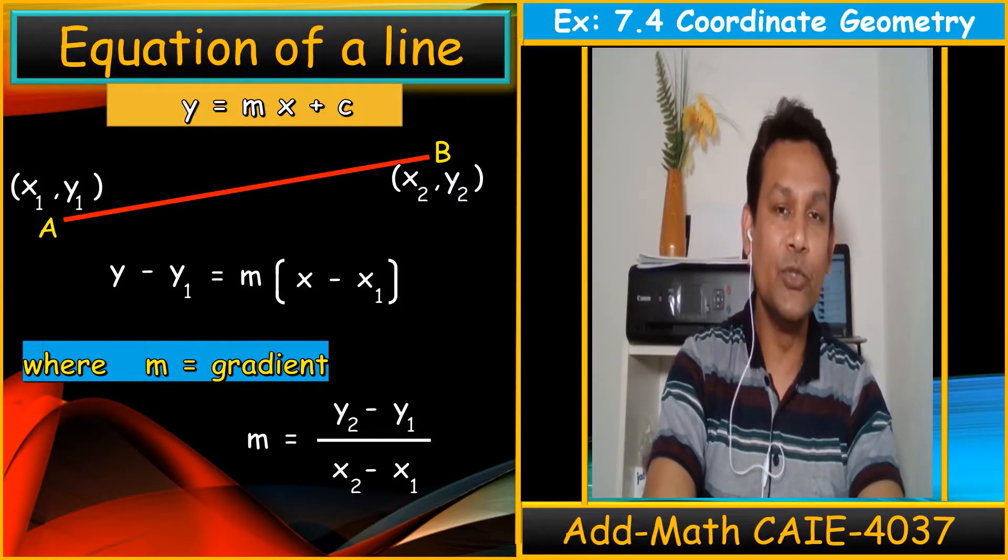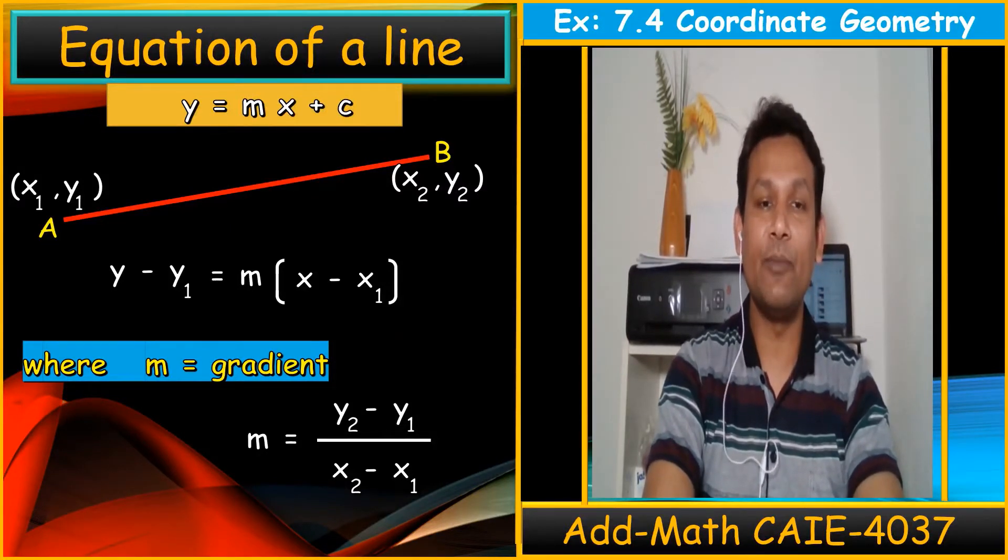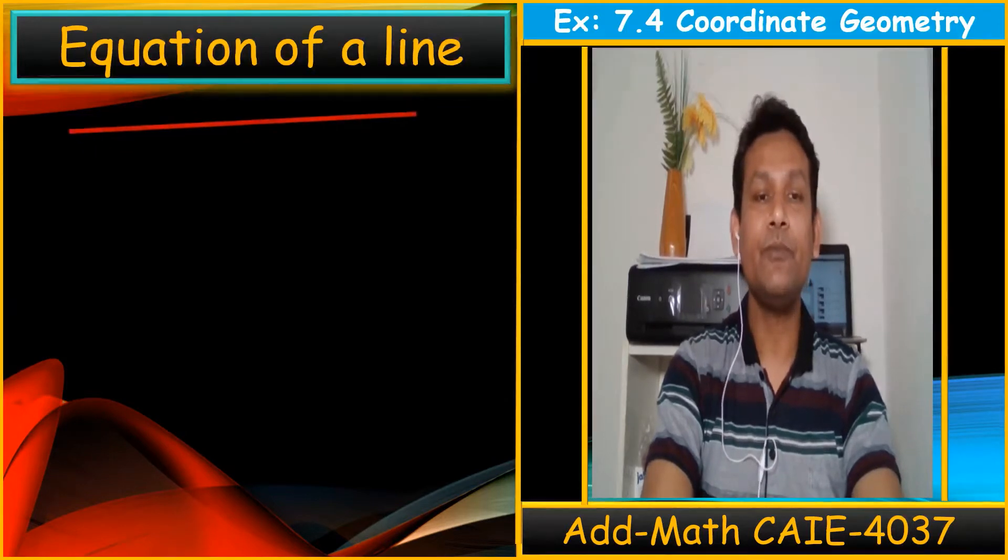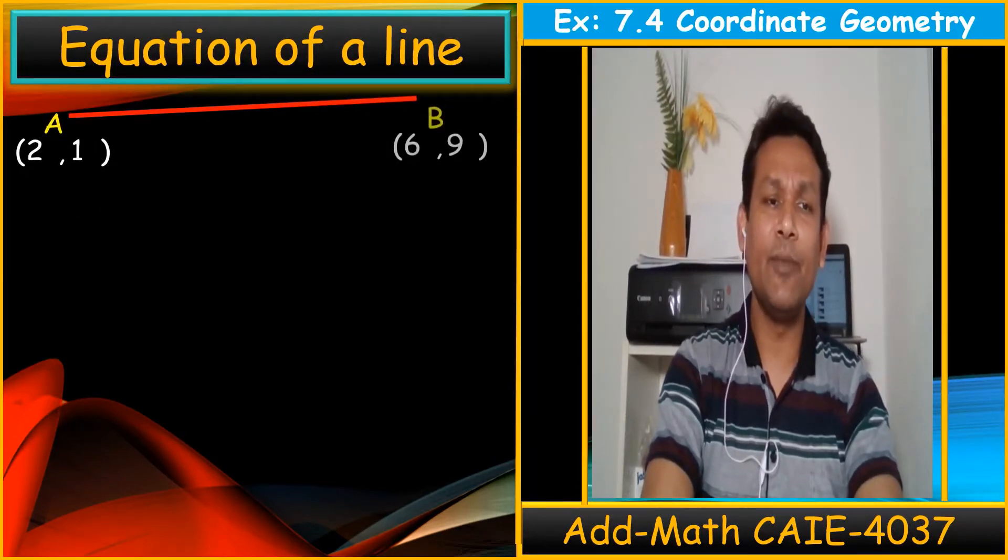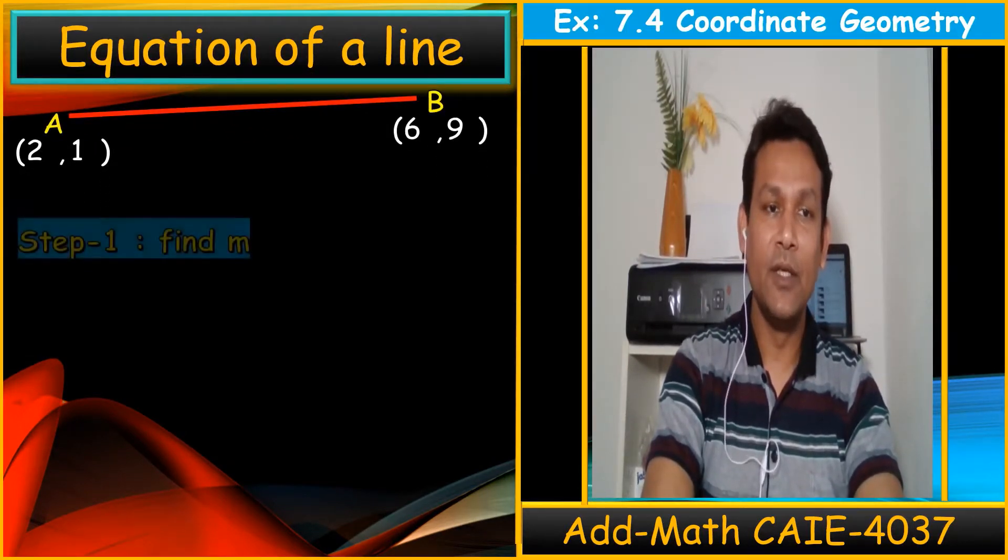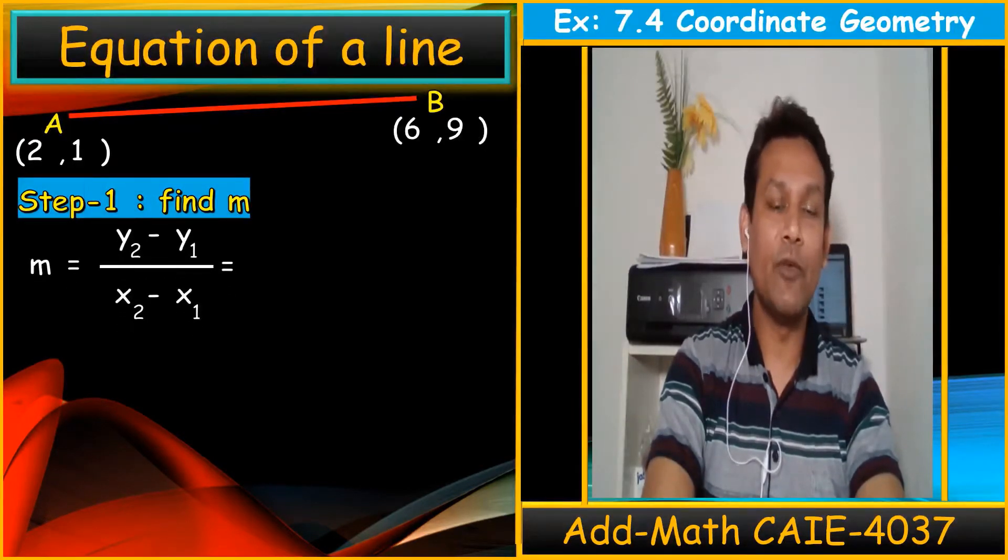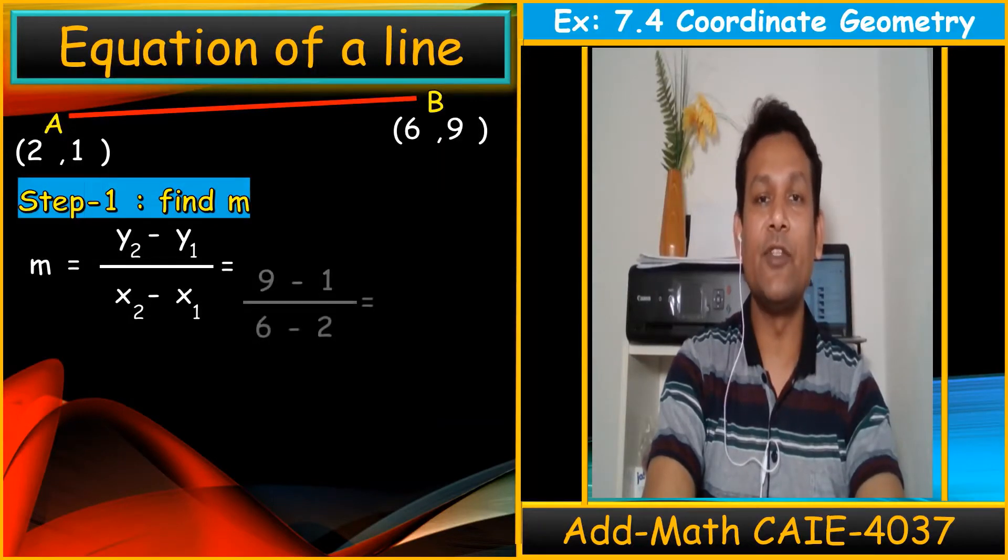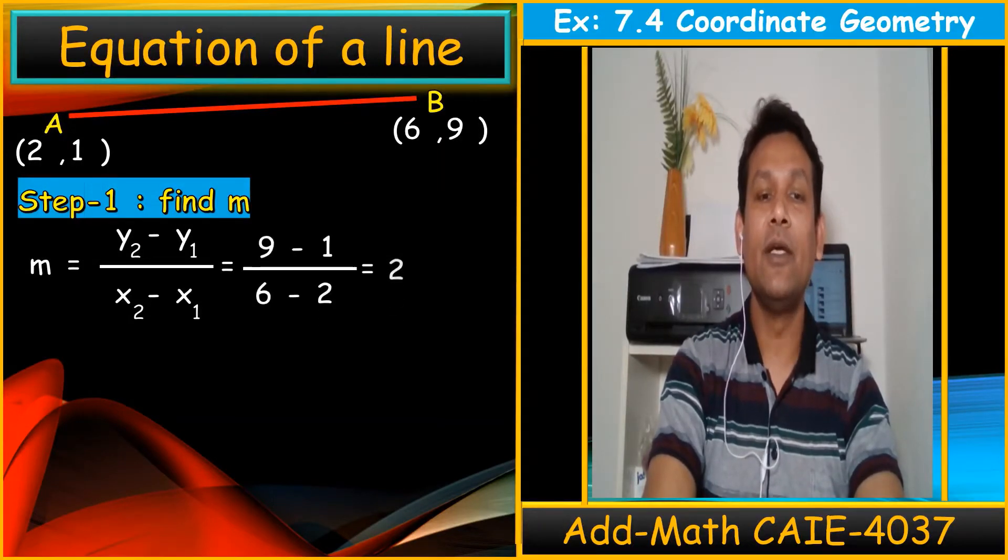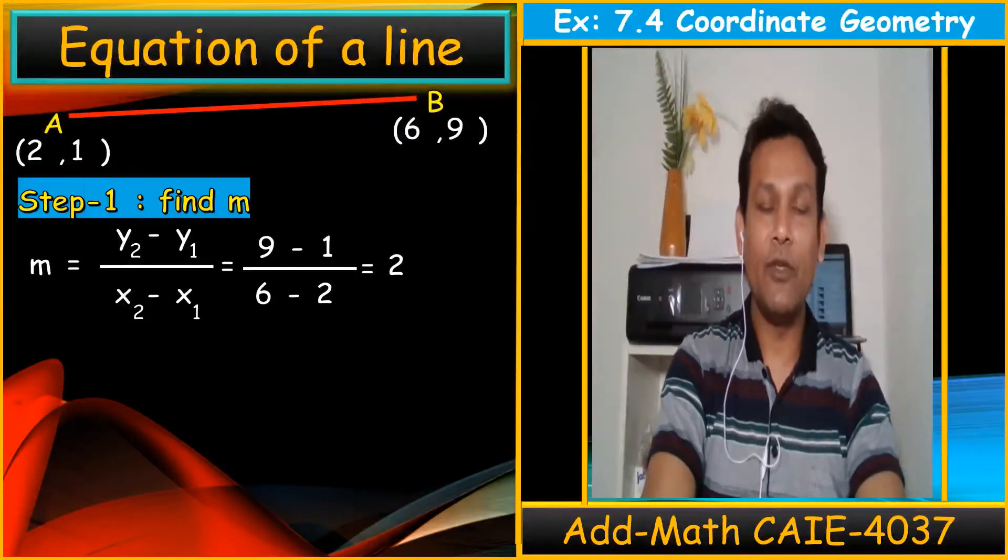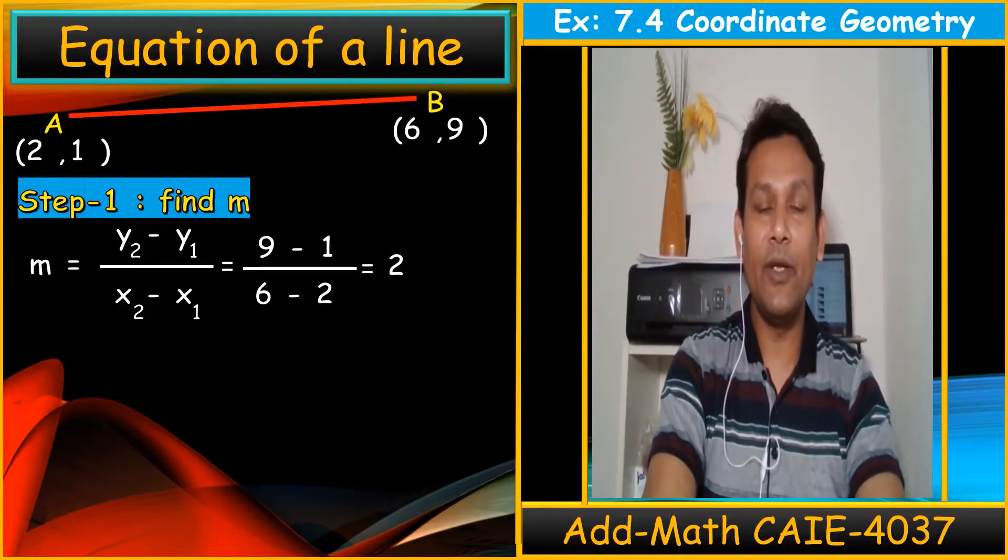I would like to give one example for how to use this equation in exercise 7.4. For example, we have two coordinates A and B: (2,1) and (6,9). Step number one: we need to find the gradient with the normal method, that's y2 minus y1 over x2 minus x1. When we substitute the values, the result is 8 upon 4, which equals 2.